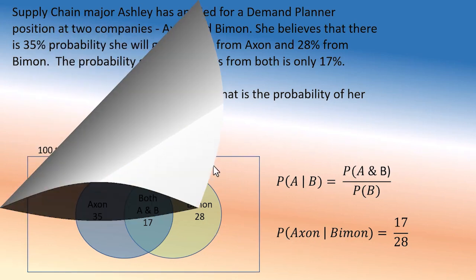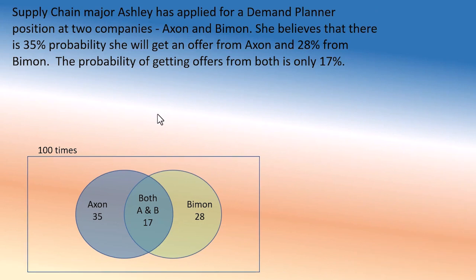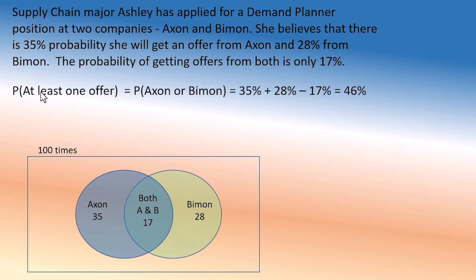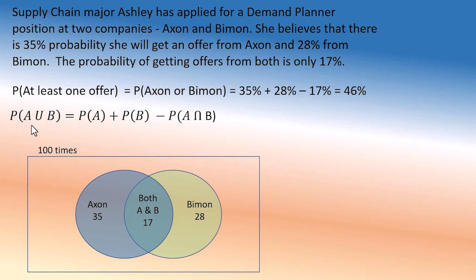Now she's wondering what are the chances she'll get at least one offer — either from Exxon or from Biman. There's a 35% chance from Exxon and 28% from Biman, but there's a common area, so it's 35 plus 28 minus 17 equals 46%. At least one offer means Exxon or Biman. The formula is: A union B equals A plus B minus A intersection B — this is 'and' and this is 'or' (union).